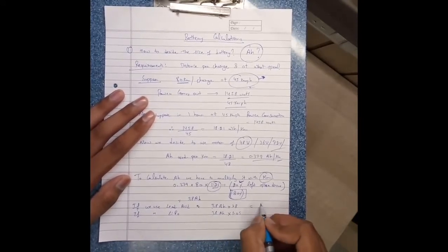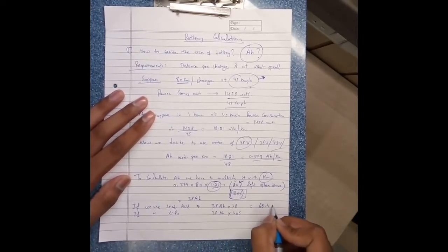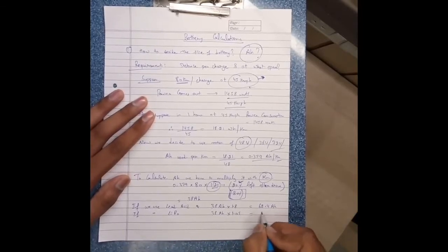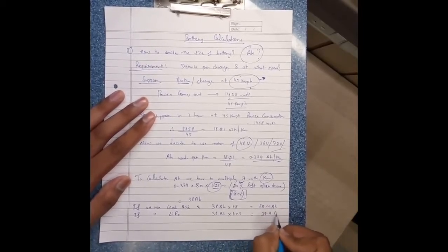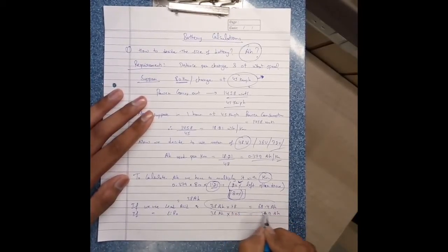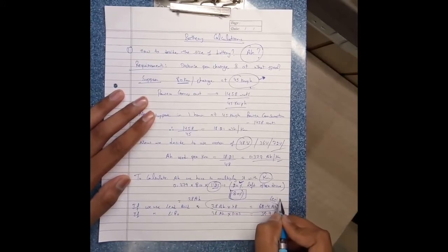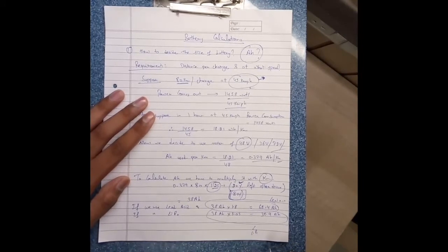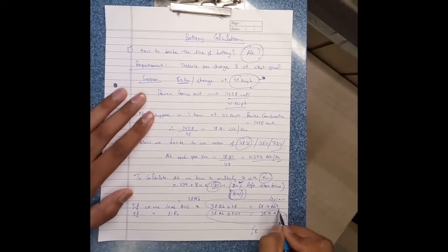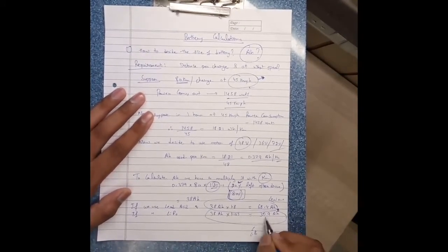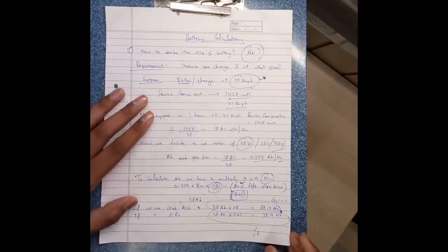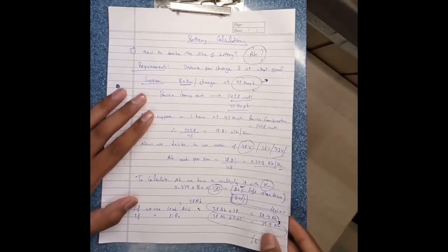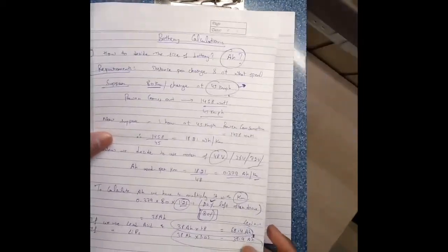It becomes 68.4 ampere or equals to 39.9 ampere. This value is for lead acid and this is for lithium polymer. This is much more difference, weight difference and also ampere difference. So battery is lithium polymer.